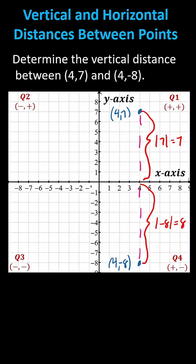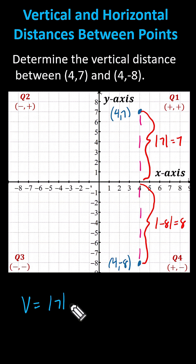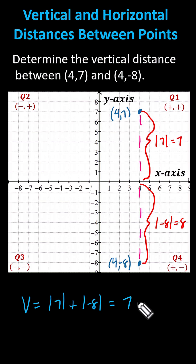This indicates the vertical distance v could be expressed as the absolute value of seven, plus the absolute value of negative eight, which equals seven plus eight, which equals 15 units.